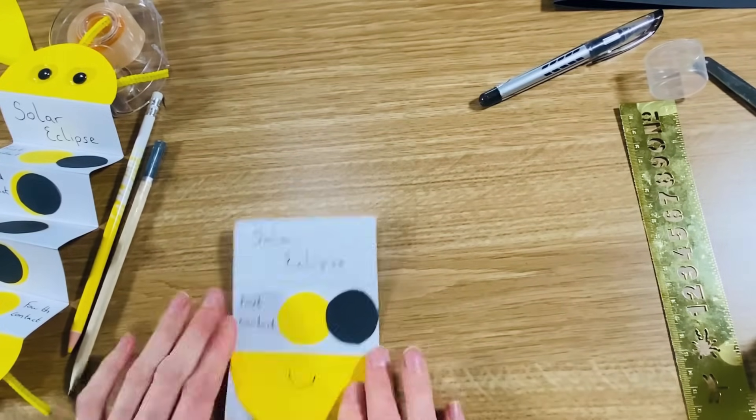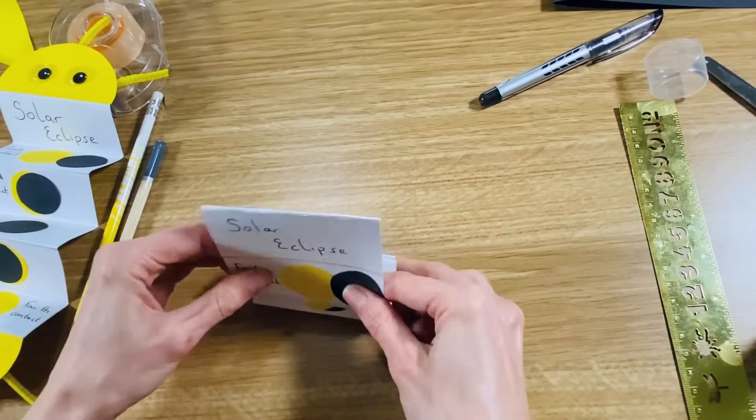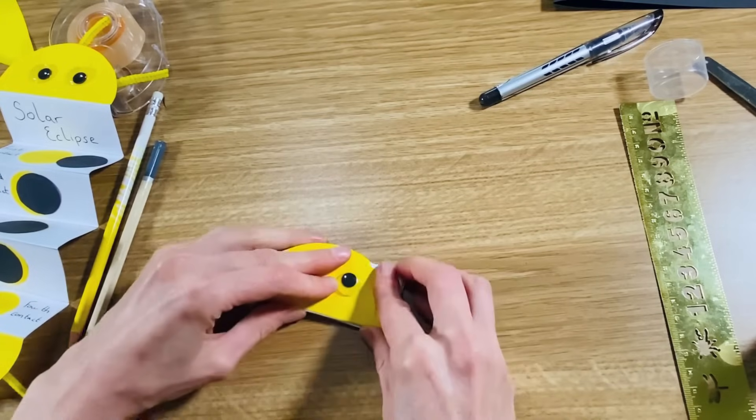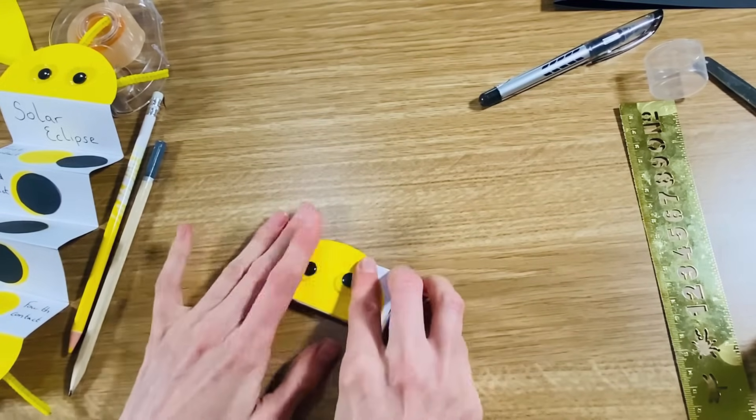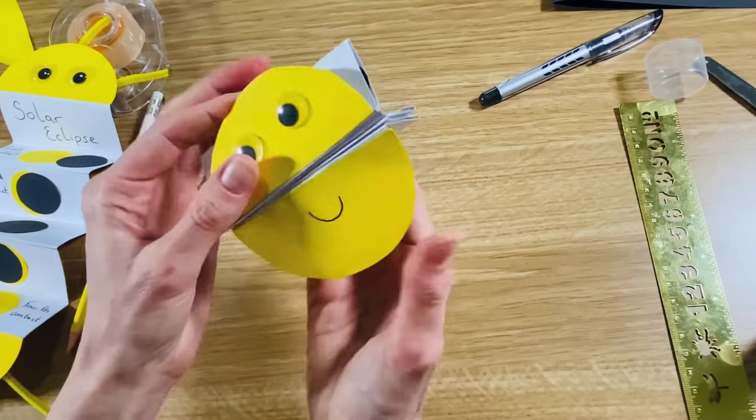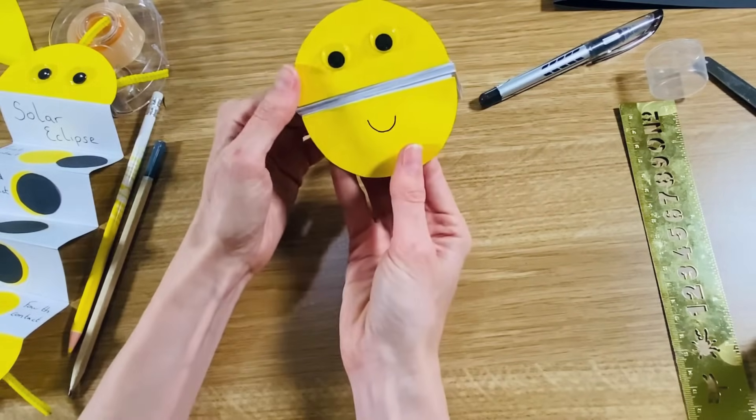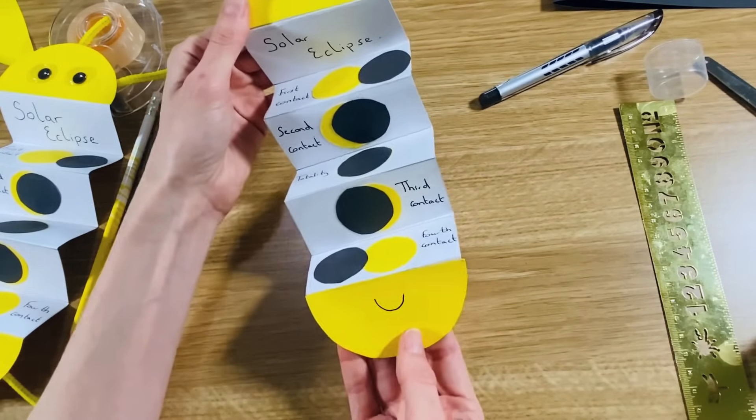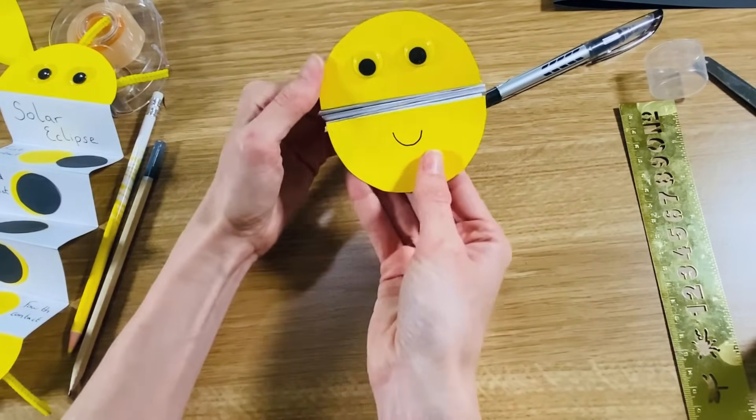It's a little bit fiddly, but once you've folded all of those sections you'll have your sun that opens up to reveal your solar eclipse inside, and then you can close it back down again.